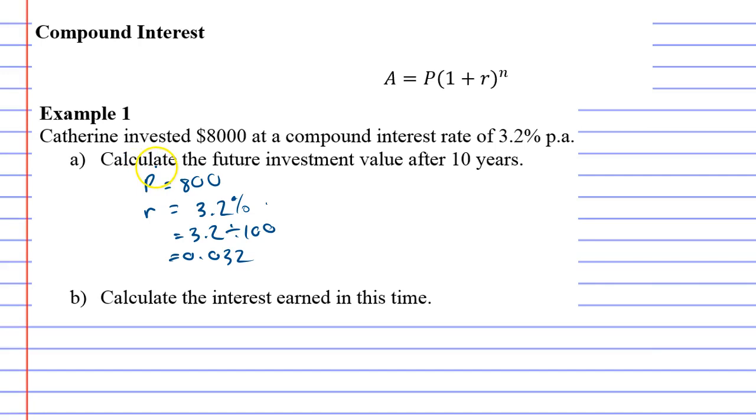Question A says calculate the future investment value after 10 years, so n equals 10. What we'll do is take our formula as above and replace each pronumeral with the amount.